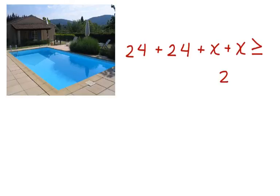Here's our pool up here in the corner. First, we have 24 plus 24, the two widths, plus the length, plus the length, our unknowns, is greater than or equal to 228 feet.